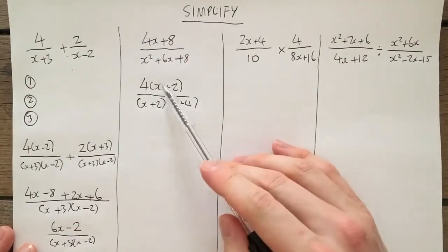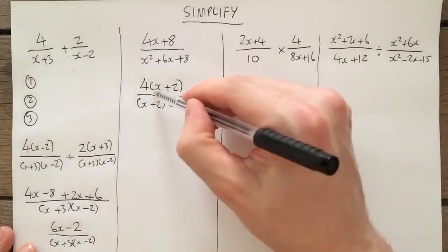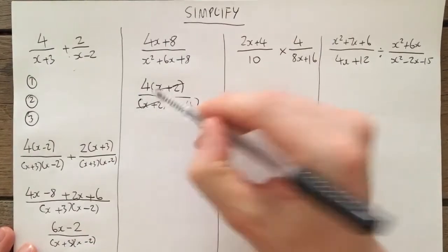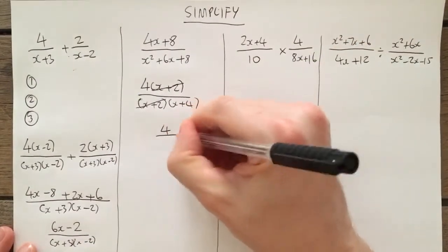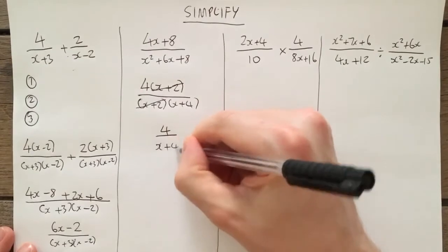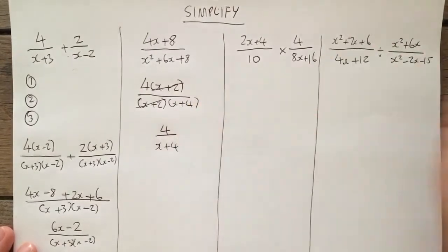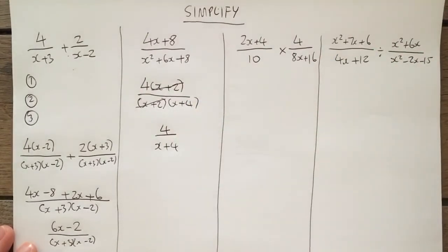I now simply say, can I cancel out? Well, they're both going to x plus 2 and x plus 2. So I divide that by x plus 2 and I divide that by x plus 2, leaving me with my final answer of 4x plus 4. I don't need to put the brackets there because it's only by itself as the expression.